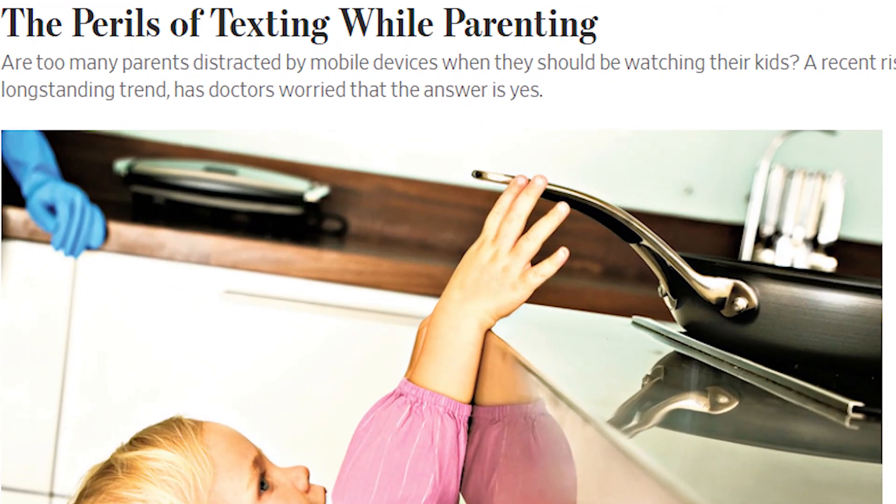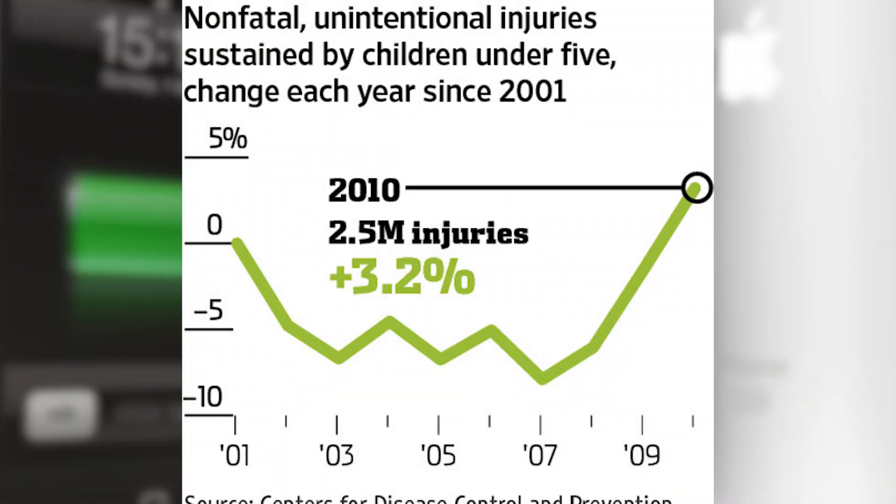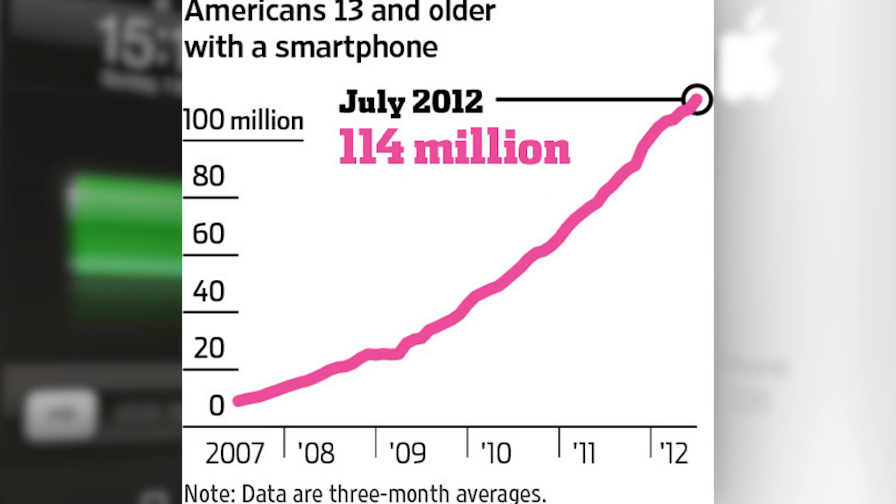I first came across this idea that the iPhone was hurting children back in 2013 when I read an article in the Wall Street Journal that documented the increase of smartphones alongside the increase in child injuries. There had been an increase in children going to the ER, and it coincided with the advent of the iPhone. You have probably heard the phrase 'correlation does not imply causation' — and that was exactly the problem with this article. They had no way to causally connect what was going on with smartphones and child injuries.